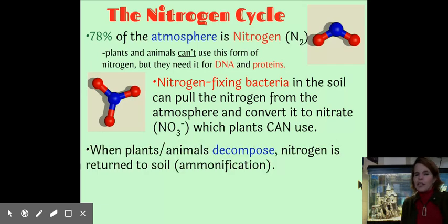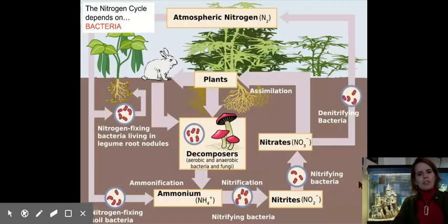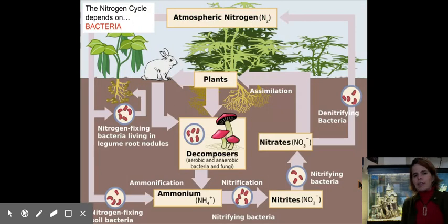And strangely enough, we have bacteria that do the opposite process. They take nitrogen that's in the soil and return it back to the atmosphere to complete that cycle. When plants and animals decompose, they're full of nitrogen also, that nitrogen gets returned to the soil during that decomposition process. They call it ammonification when we're talking about the nitrogen specifically. And then those other bacteria in a process called denitrification return the nitrogen back to the atmosphere.